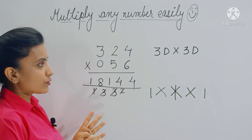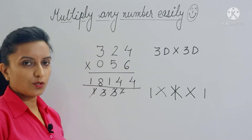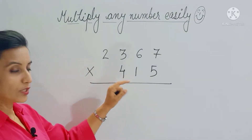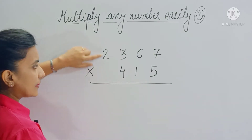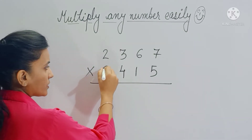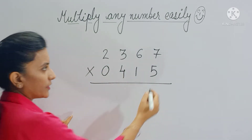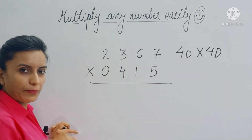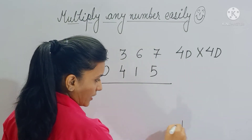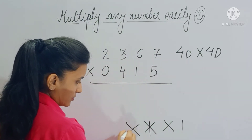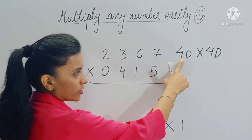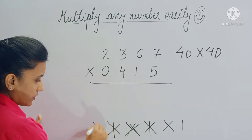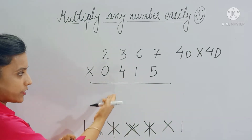You can see how quickly we did that question — this trick is really very fast. Let's take one more example: multiply 2367 by 450. This is a four-digit number and 450 is a three-digit number, so placing one zero here makes it a 4D by 4D multiplication. The pattern for 4D by 4D is i, cross, star, double-cross — four designs — then repeat: star, cross, i. So in total you follow seven steps.